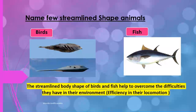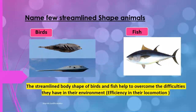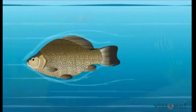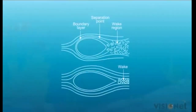The streamline body shapes of birds and fish help them overcome difficulties in their environment. We call that efficiency in their locomotion. This is the importance of the streamline body shape.